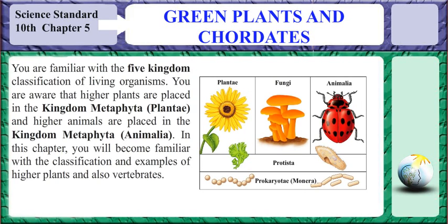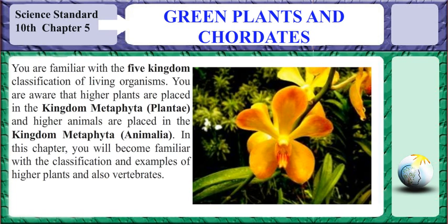Green plants and chordates. You are familiar with the five kingdom classification of living organisms. The five kingdoms are Kingdom Monera, Kingdom Fungi, Kingdom Protista, Kingdom Plantae, and Kingdom Animalia.